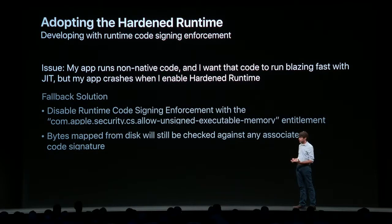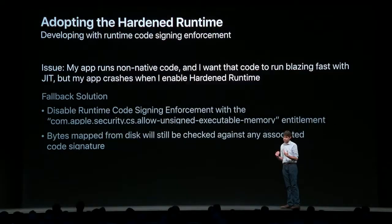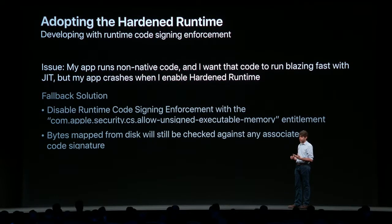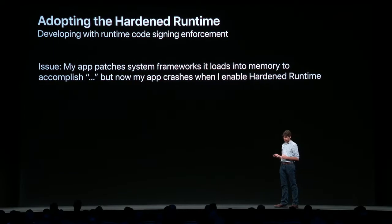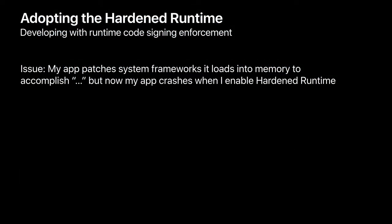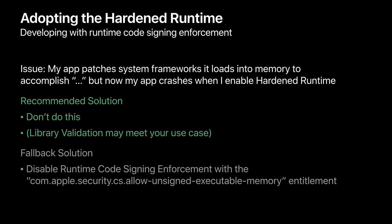If you can't adopt the MAP_JIT flag because you don't have source code access to your JIT engine, you can use the allow-unsigned-executable-memory entitlement. This will lower the security protections provided by runtime code signing enforcement to just verifying that for every piece of memory that does have a code signature associated, all of the bytes read from disk match that. But it allows modification to any of your memory inside your process and allows the creation of unsigned executable regions. Similarly, if you attempt to patch system frameworks you've loaded in after adopting the hardened runtime, the allow-unsigned-executable-memory entitlement will allow you to modify those mapped memory pages.